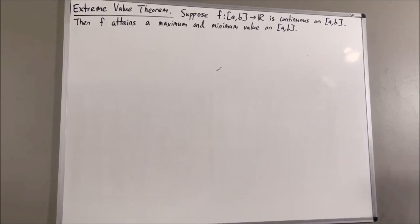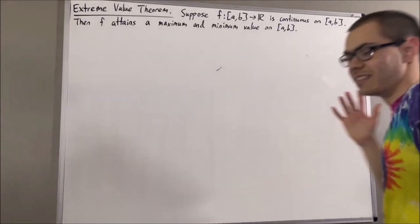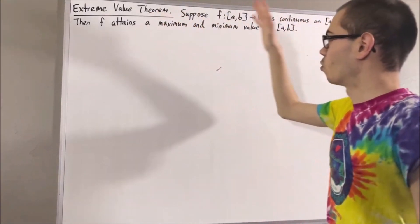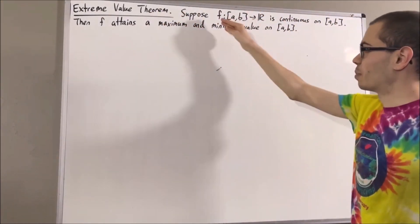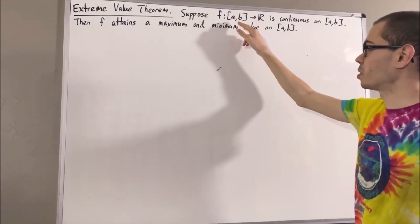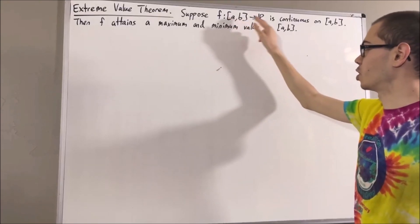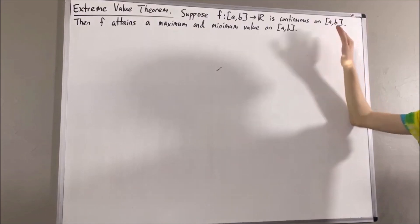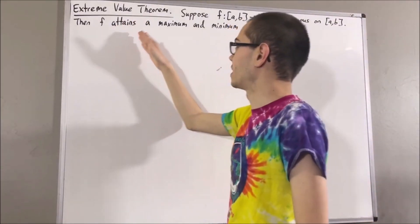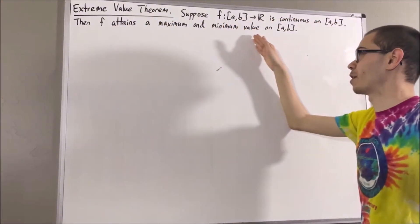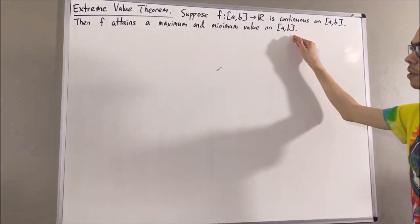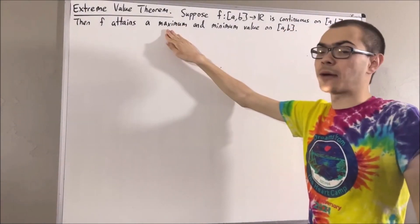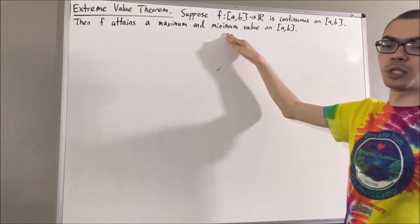Hello! In this video, we are going to prove the extreme value theorem, which tells us the following. Suppose f is a function from the closed interval [a, b] to ℝ, and f is continuous on [a, b]. Then f attains a maximum and a minimum value on [a, b]. Or sometimes, you might see this called absolute maximum or absolute minimum.